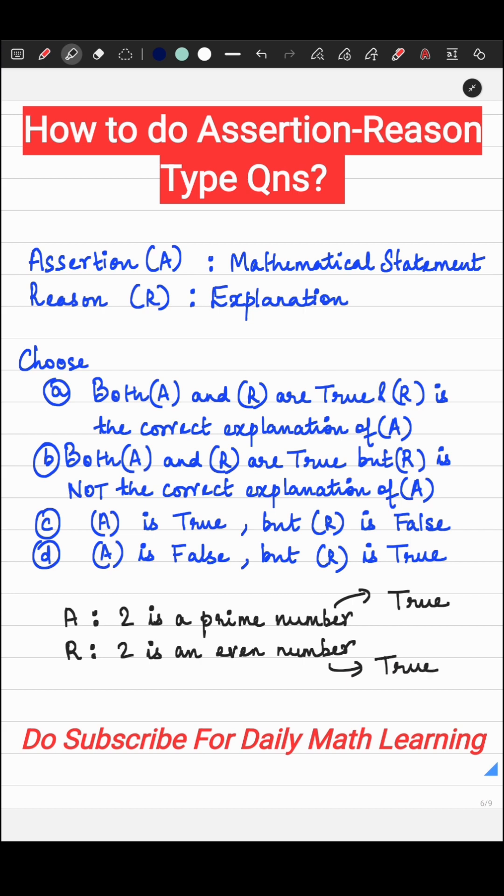Now, does R explain A? Does the second statement explain the reason why the first statement is true? Being even doesn't explain why two is a prime number. Not all even numbers are prime numbers. So the reason is just another fact about the number two, but it does not explain the assertion given.